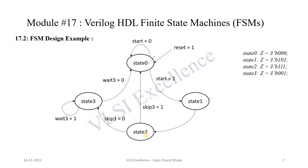In state 3, depending on the wait3 variable, we either remain in state 3 or go to state 0. As long as wait3 is 1 we stay in state 3; otherwise we go to state 0. The output from this FSM is a 3-bit value: in state 0 it is 3'b000, in state 1 it is 3'b101, in state 2 it is 3'b111, and in state 3 it is 3'b001.